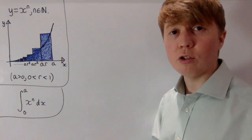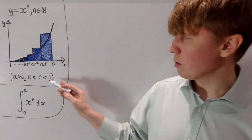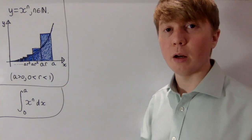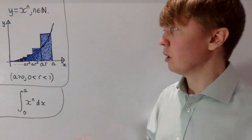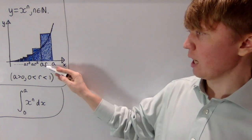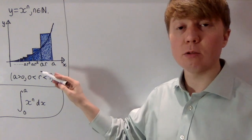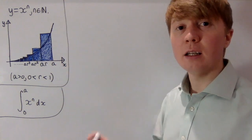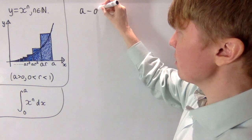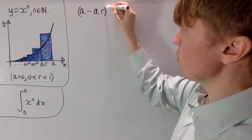So how are we going to choose these rectangles? The key idea is we choose some value of R between zero and one, preferably quite close to one, and then we put this point AR on the x-axis. So we're looking at our first rectangle just going between AR and A, which is going to have width A minus AR.